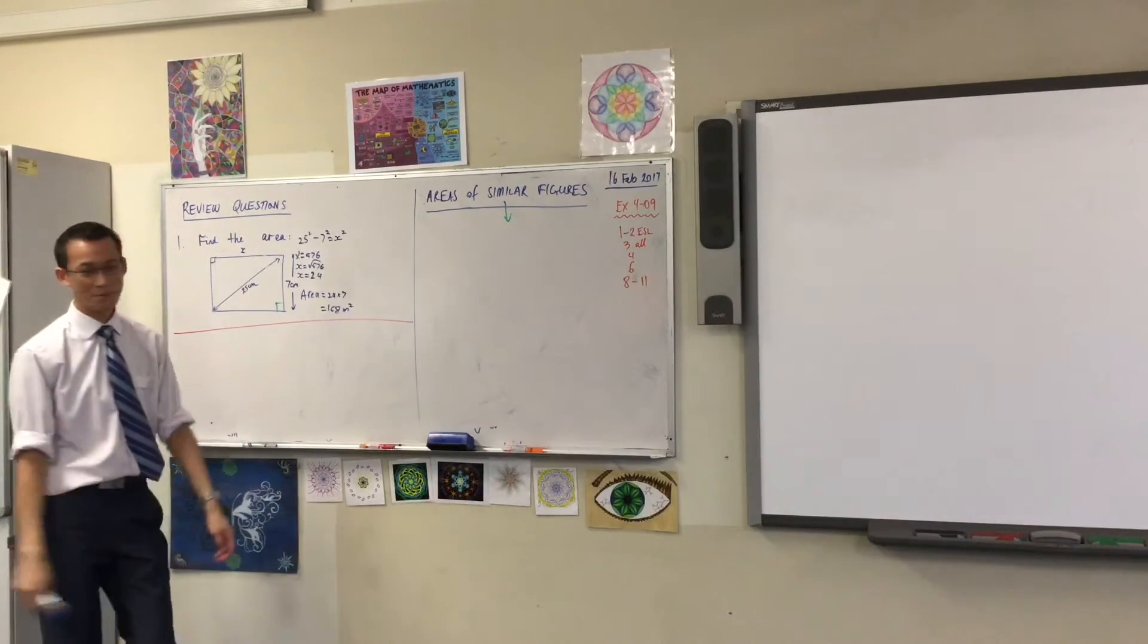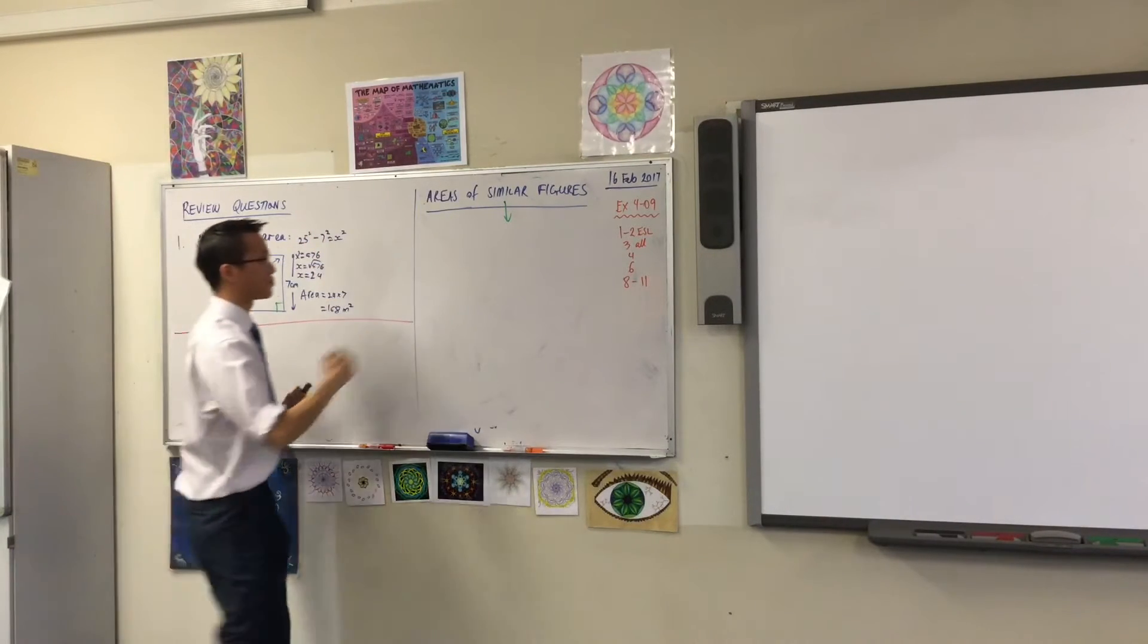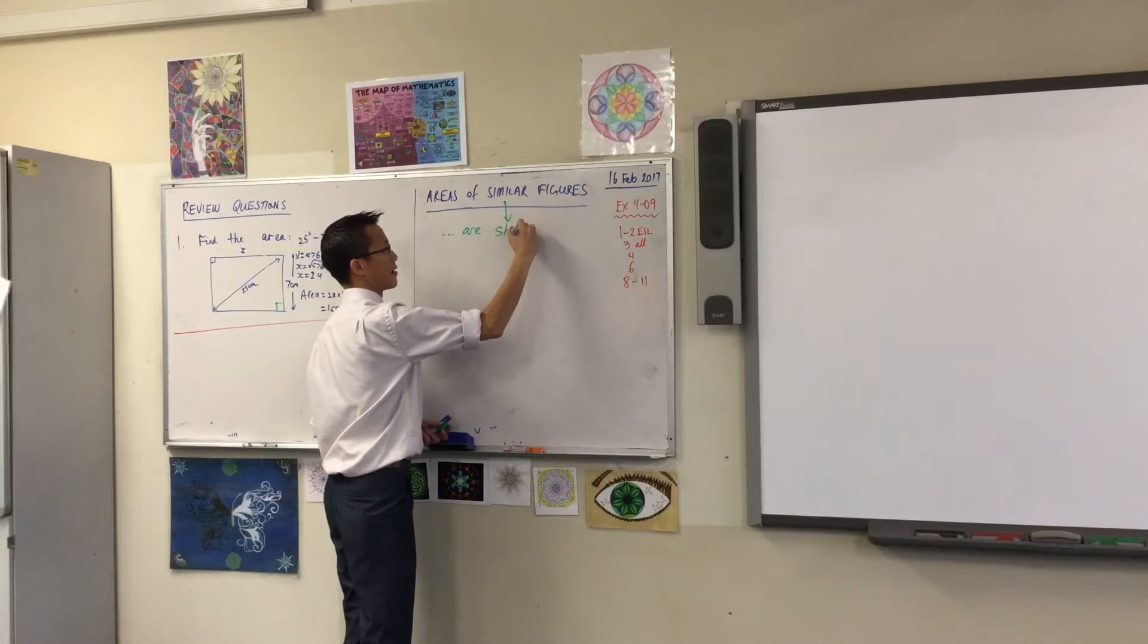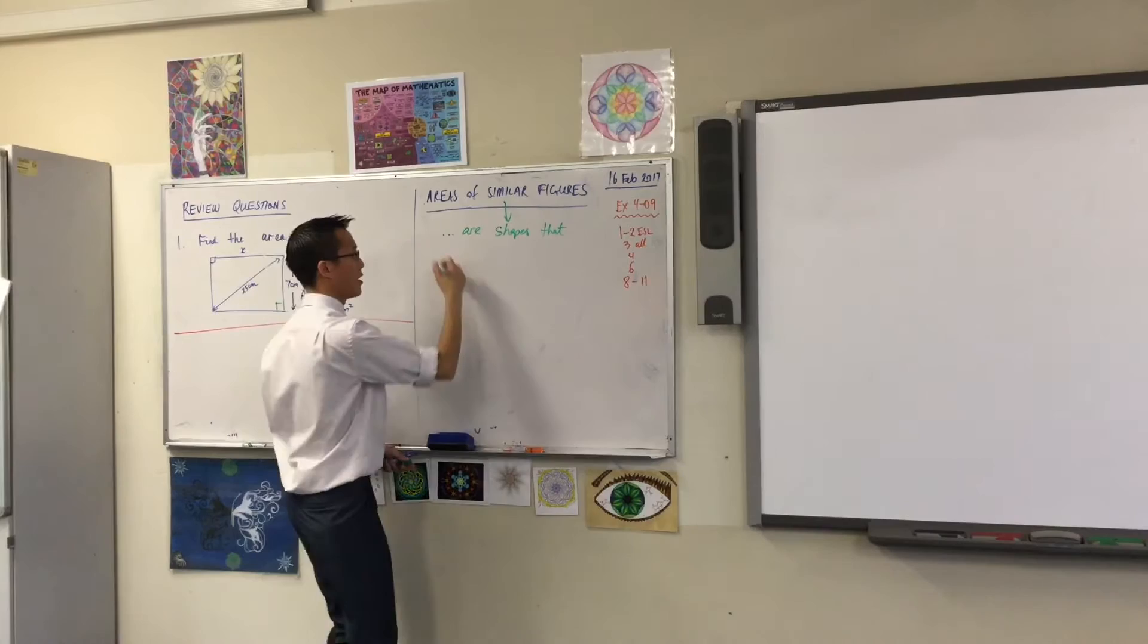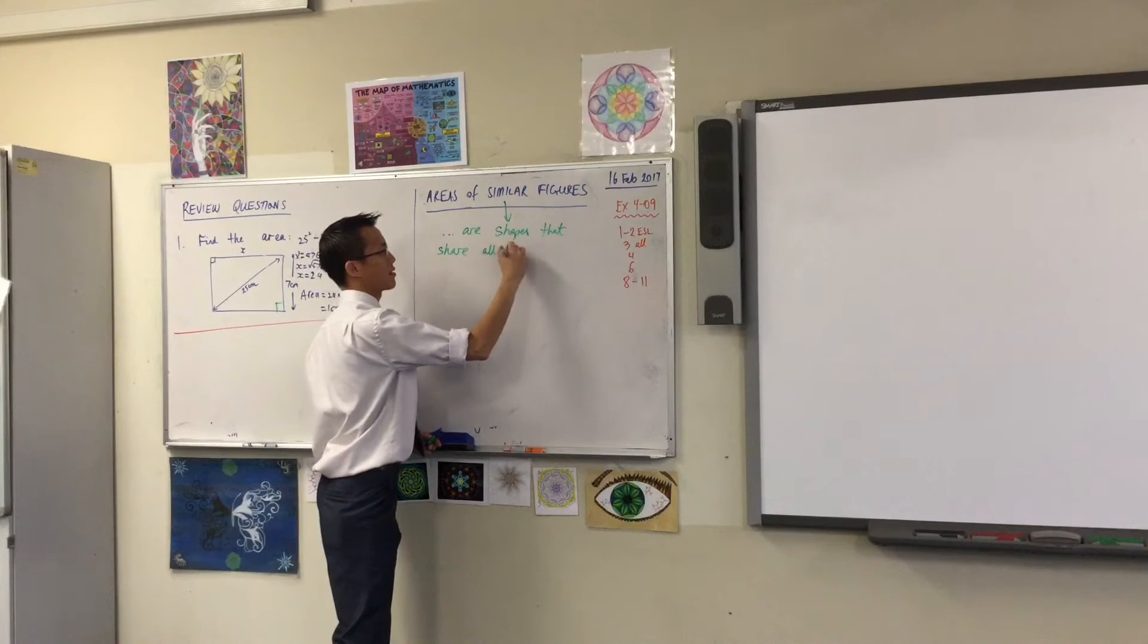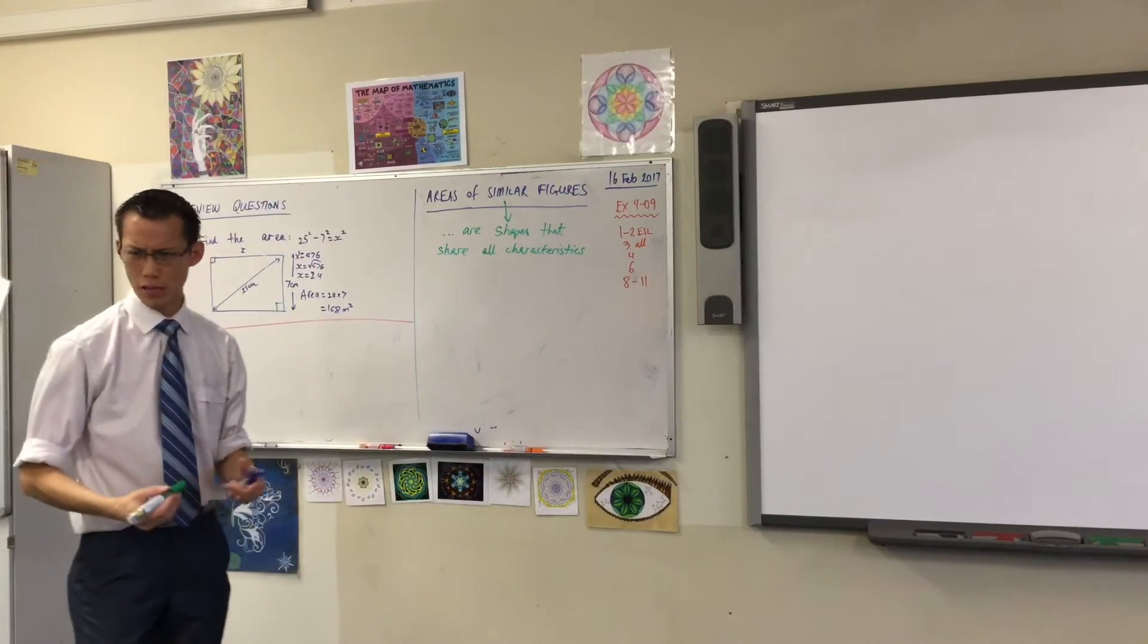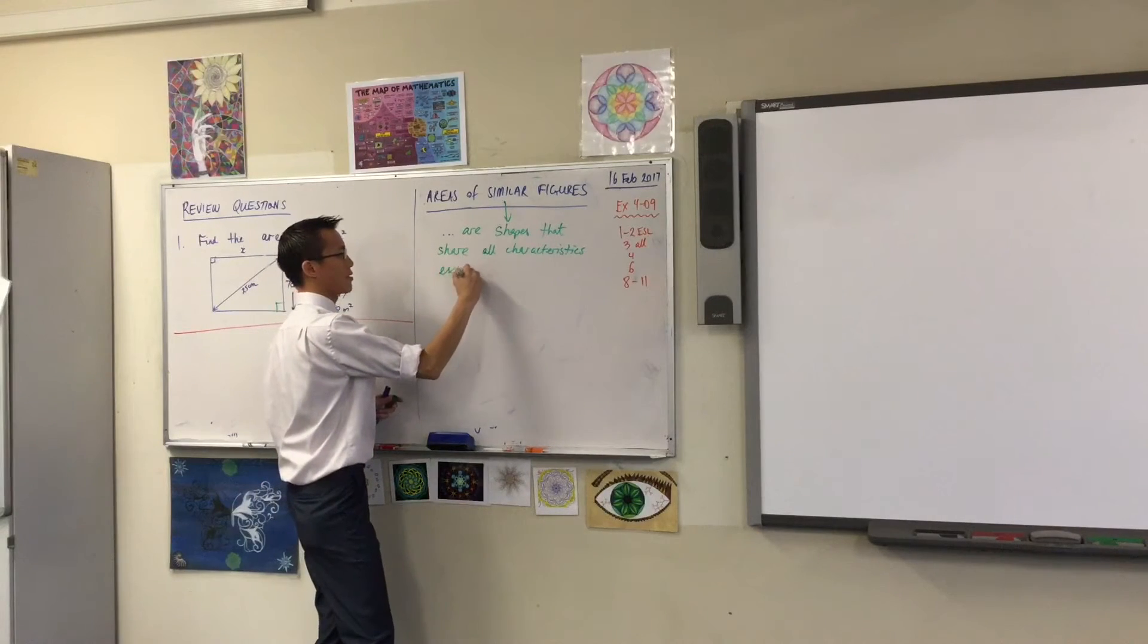Let's all write a definition. Similar figures, let's have a definition. Similar figures are shapes that share all characteristics, and I'm going to try and capture all of the things that we've just mentioned. So I'm going to say shapes that share all characteristics, and that includes properties, it includes ratios, it includes angles, all characteristics except size.